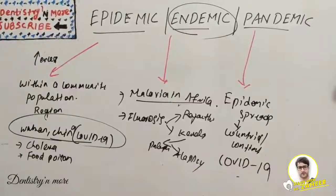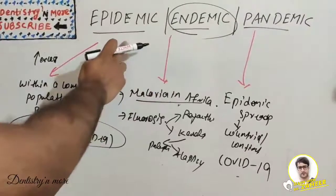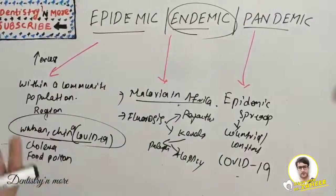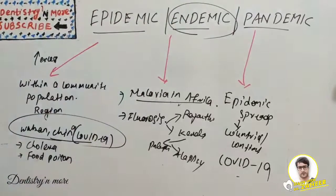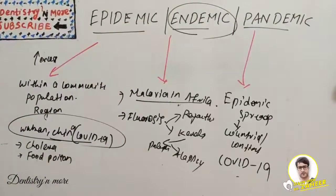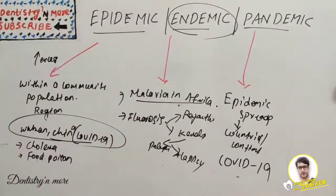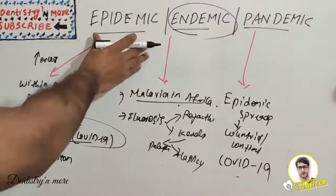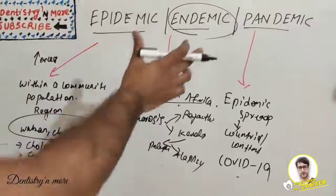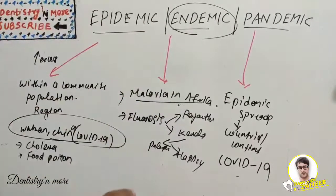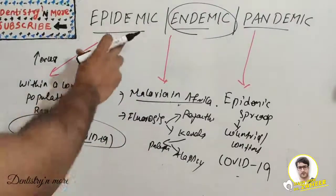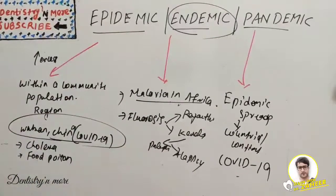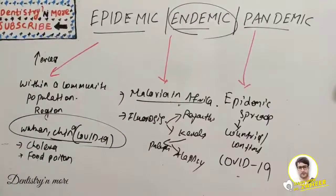To summarize: endemic can become epidemic when the disease increases at a rapid rate, and epidemic can become pandemic when it spreads to many countries. Epidemic is a very active increase in the number of cases; endemic is the constant presence of a disease in a particular area or region; and pandemic is the worldwide spread of a particular epidemic. I hope you understood these concepts, and I'll come up with another topic soon. Thank you.